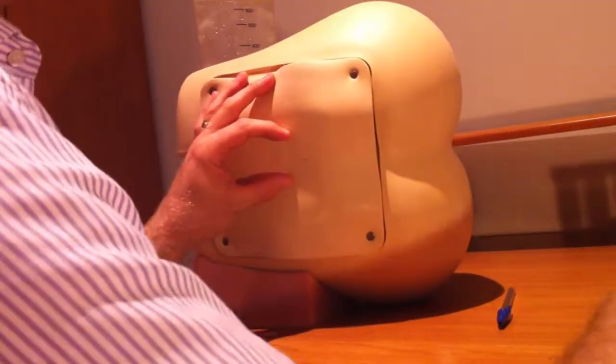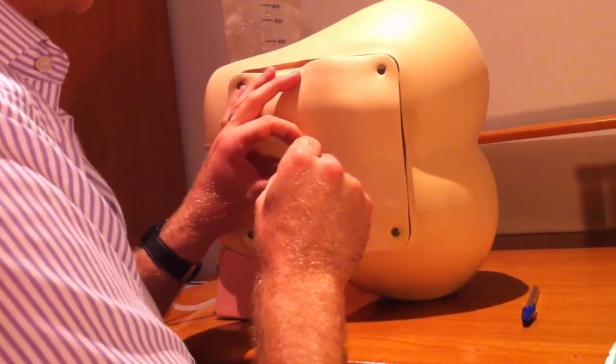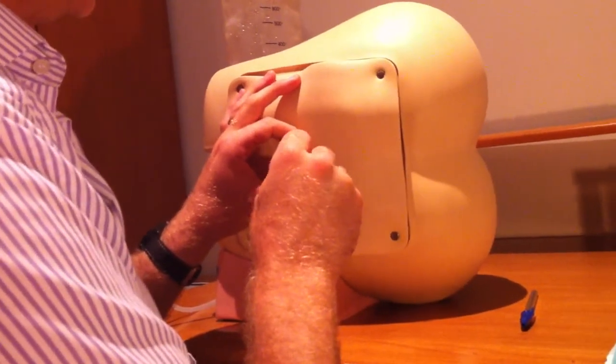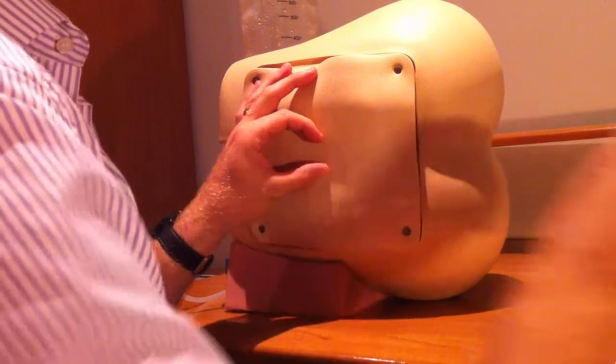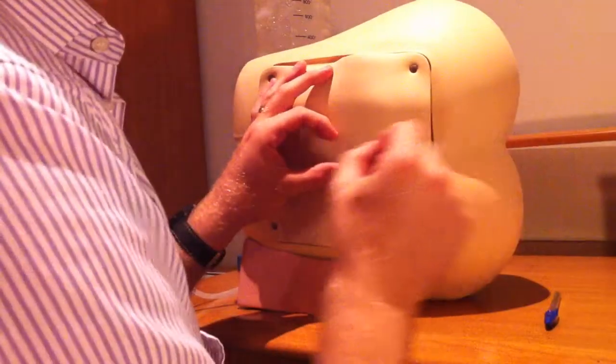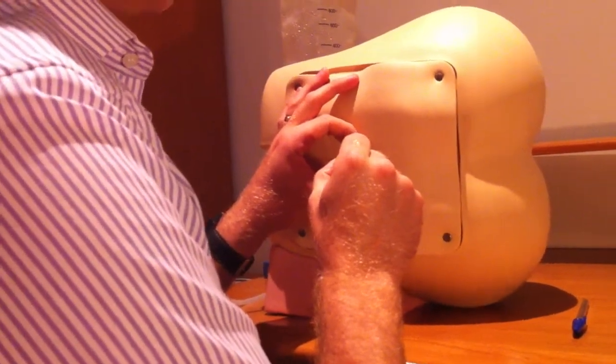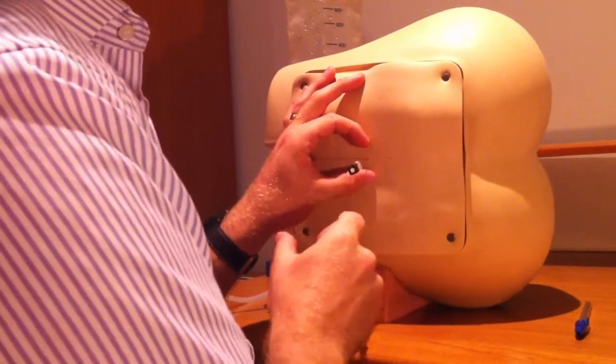My own practice really is to favour just using the local anaesthetic. Rotating it slightly to make sure I've made a small entry point in the skin and then inserting the atraumatic needle through that small hole.